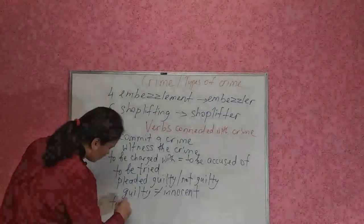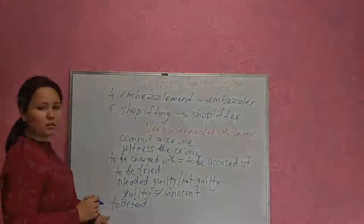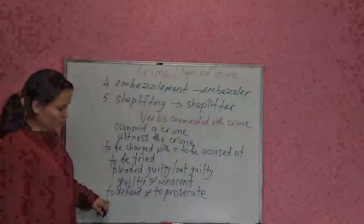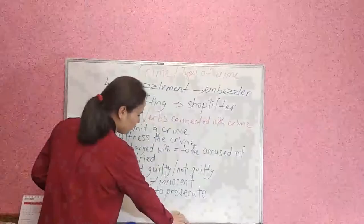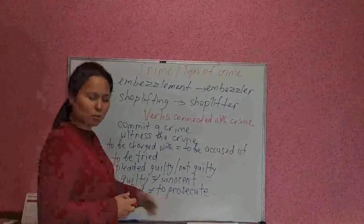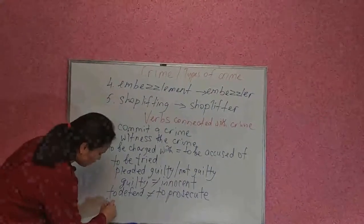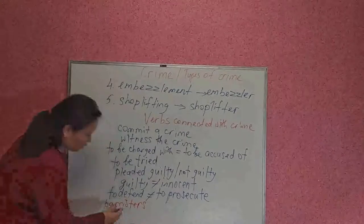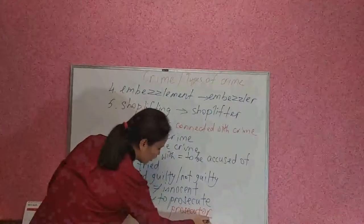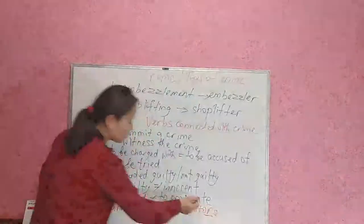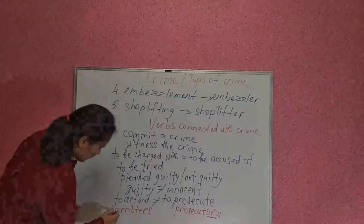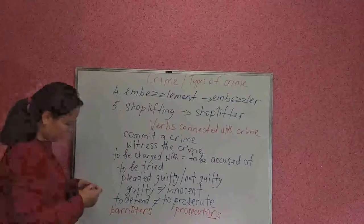Next: 'to defend' and its antonym 'to prosecute.' Usually, defenders are barristers — barristers usually defend. And prosecutors usually prosecute. Prosecutor means a state attorney, and barrister means a defense lawyer. Barristers: B-A-R-R-I-S-T-E-R-S.